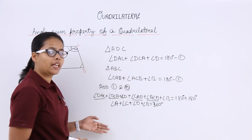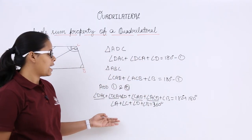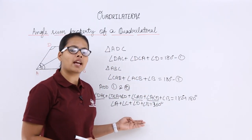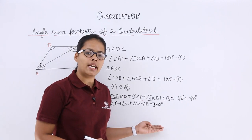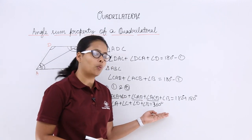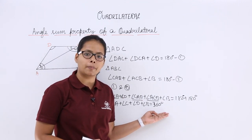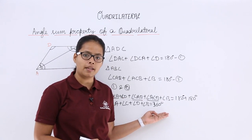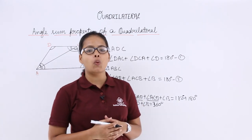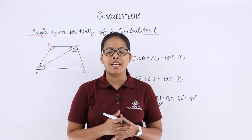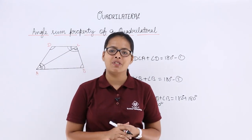So what can you see here? The sum of the angles of a quadrilateral is equal to 360 degrees — that is 180 plus 180. I will be proceeding with quadrilaterals in the next video lecture. Thank you.